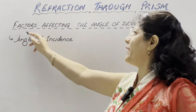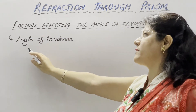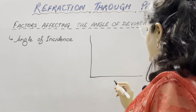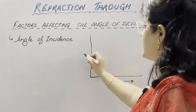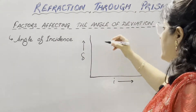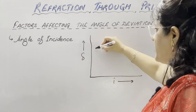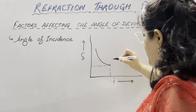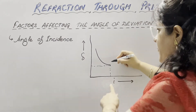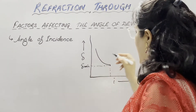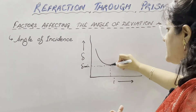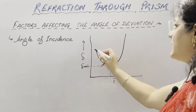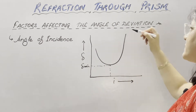Now we are going to discuss factors affecting the angle of deviation. The first and most important factor is the angle of incidence. To understand the interdependence, we draw an i-delta curve with angle of incidence on the x-axis and angle of deviation on the y-axis. When we increase the angle of incidence, the angle of deviation first decreases, reaches a certain minimum value (delta minimum), and then after that minimum it increases again.